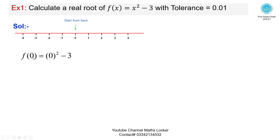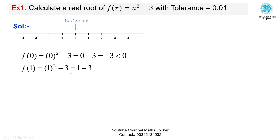We get f(0) = 0² - 3 = -3, which is less than 0. The next number is 1: f(1) = 1² - 3 = 1 - 3 = -2, which is less than 0. There is no change of sign, which means the real root does not lie in the interval [0, 1].